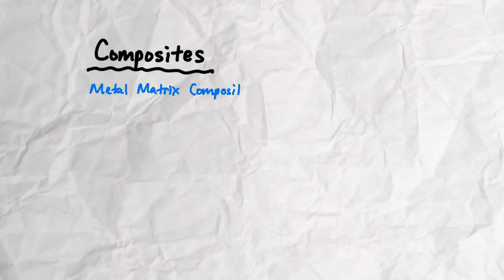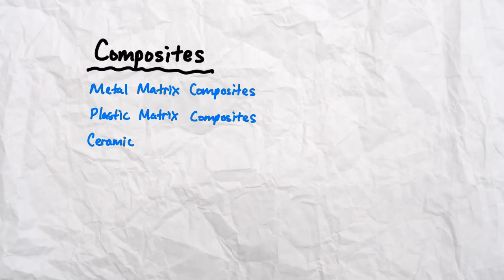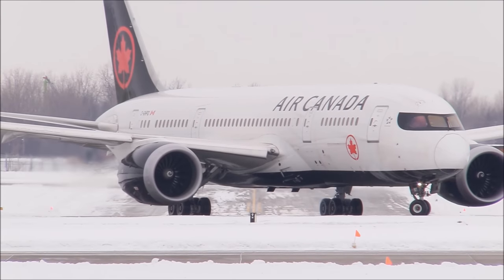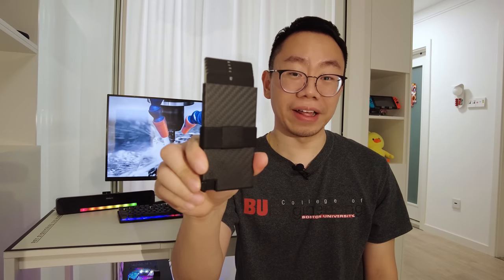Composites, on the other hand, are made by combining two or more material types. There are metal matrix composites, plastic matrix composites, and ceramic matrix composites. The most popular composite is probably carbon fiber, which offers superior strength, durability, and lightweight properties. They're used in automotive and aircraft components, as well as this fancy, stylish wallet by Ekster, the sponsor of today's video.